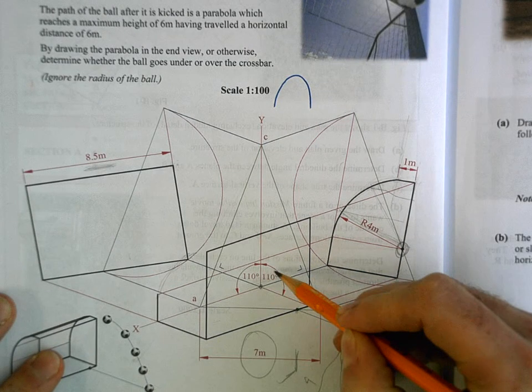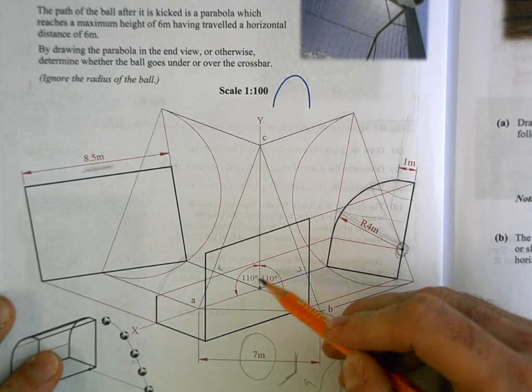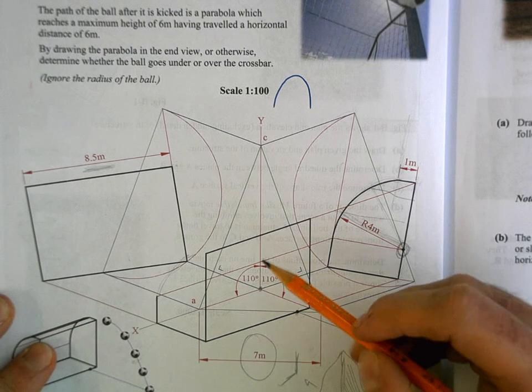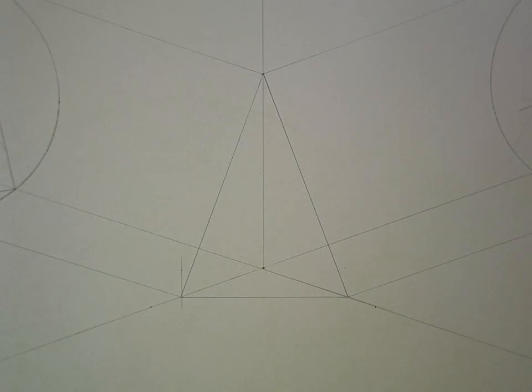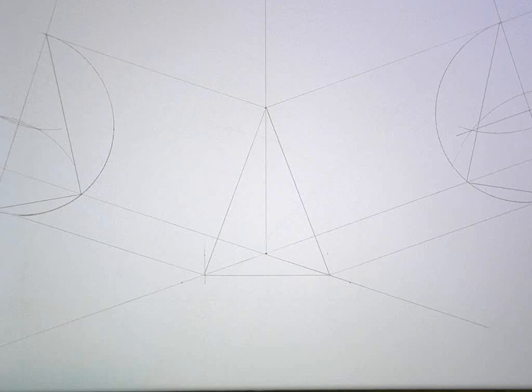Then you draw your angles that are given, 110 in this case, can be different in other questions, to get your X and your Z axis. So I've prepped that in the sheet here already, but I'll just draw over heavy what I've just been talking about.